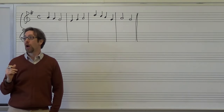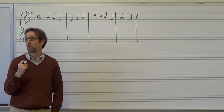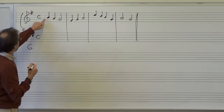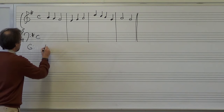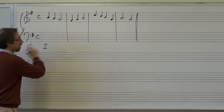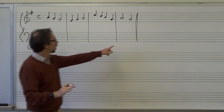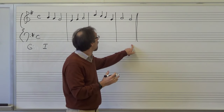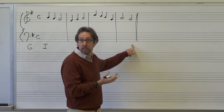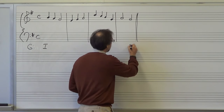The next step is I want to try to put my first chord as a one chord. So I ask myself: is B in the one chord of G major? The answer is yes, so I'm just going to put the one chord in. Then I look at the last chord — is G in the one chord of G major? Absolutely. So I put my one chord there.